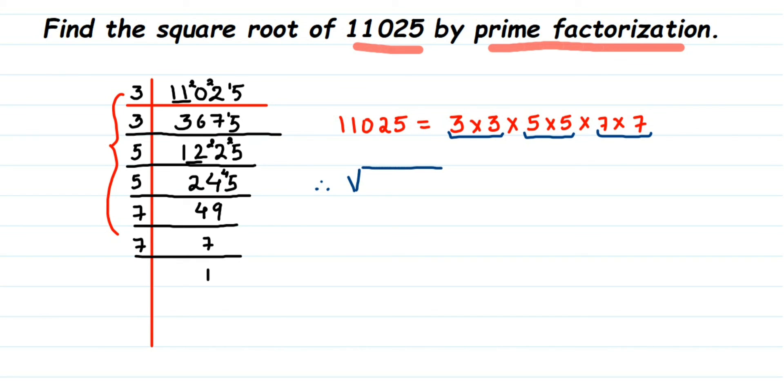Square root of this number is equal to: from this pair I'm going to take one three, and from the next pair I'm going to take one five, and from the last pair I'm going to take one seven, and then just multiply them. So three times five is fifteen, fifteen times seven is 105.